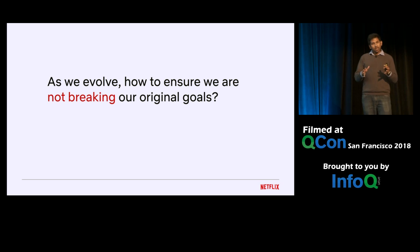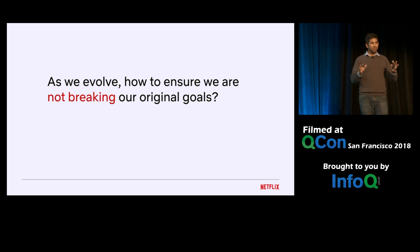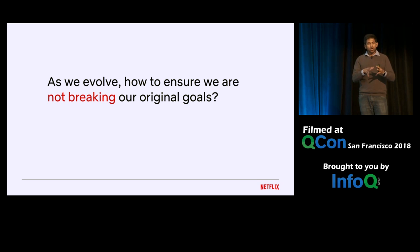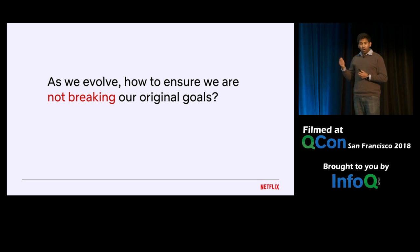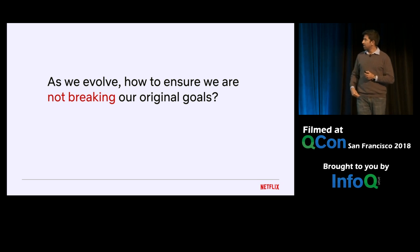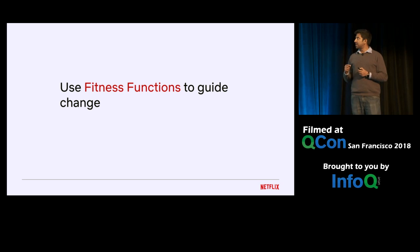Typically, when you start an architecture fresh and deploy it for the first few months, things look rosy and fine. But as new business use cases come in, complexity usually creeps in — often at the cost of the original principles which guided the architecture. The key question to ask is: as we evolve, how do we ensure we are not breaking our original goals? And if we are breaking them, it has to be an intentional choice.